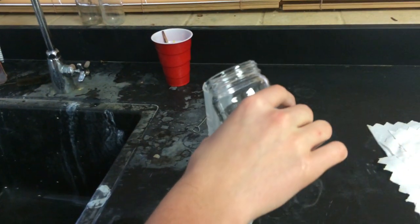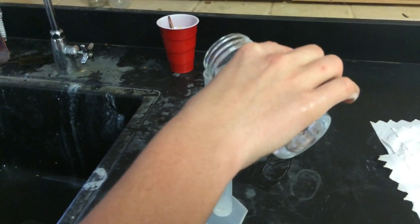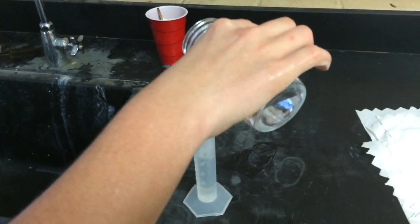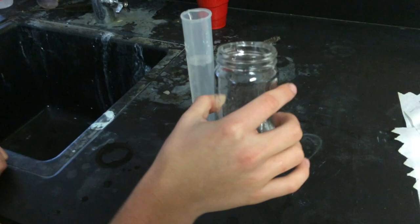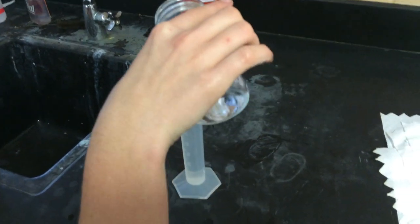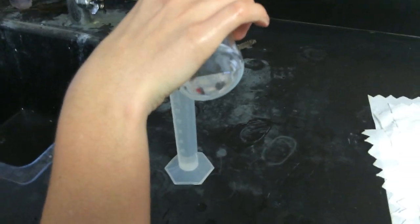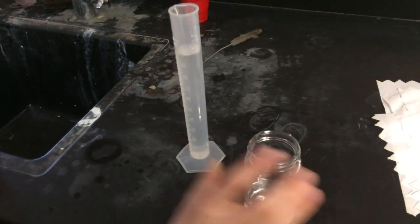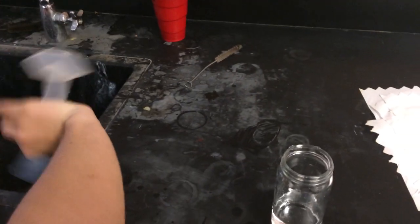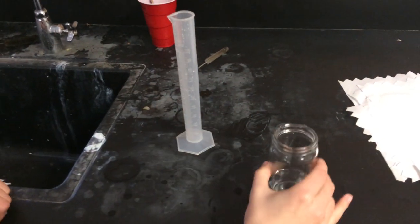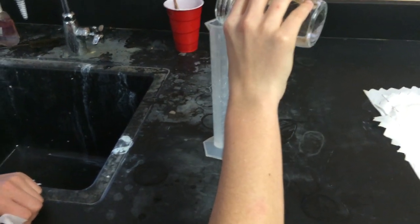Then we would dump that water out and continue measuring. So you might have two graduated cylinders full of 100, so that's 200 milliliters, and then you might have a third full with like 20 milliliters. So that would be 220 milliliters of gas that we collected.